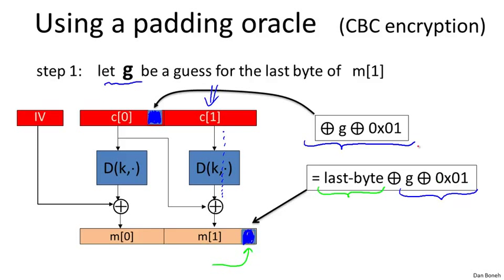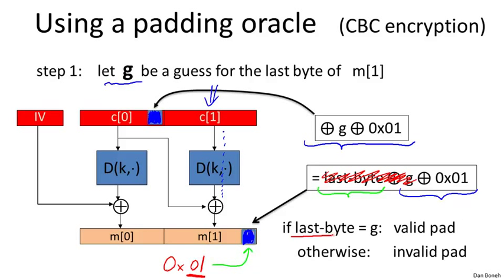If the guess G for the last byte of M1 is correct, then last_byte XOR G equals 0, and what we get is the last byte of the plaintext is just 0x01 — which is a well-formed pad. Therefore the pad is valid, and the padding oracle will say the pad is valid. If the guess is incorrect, we'll get a value not equal to 1, and it's very likely we have an invalid pad, so the padding oracle will say the pad is invalid.